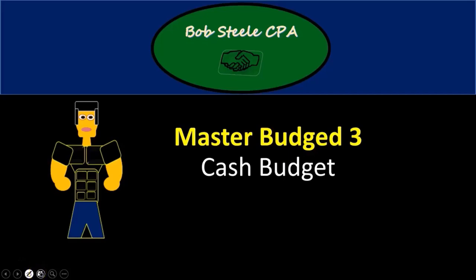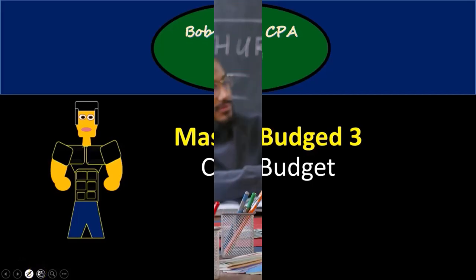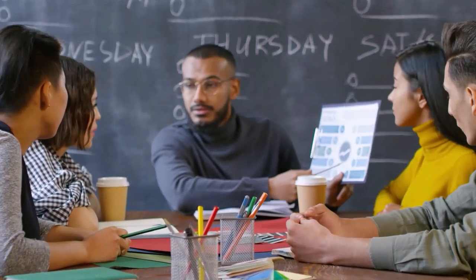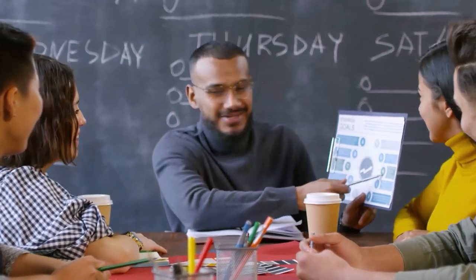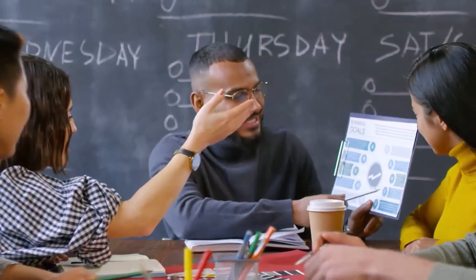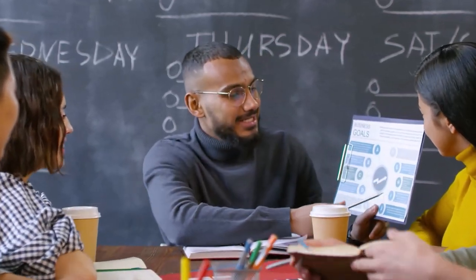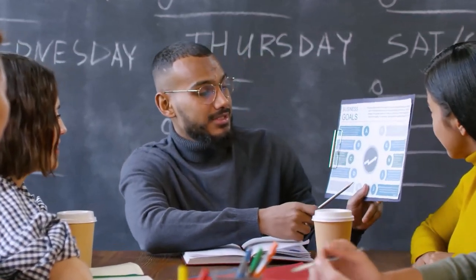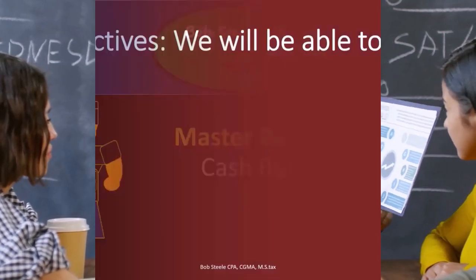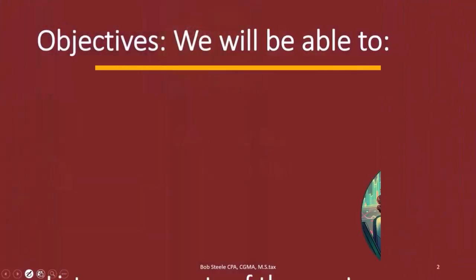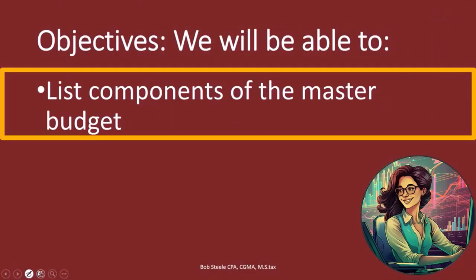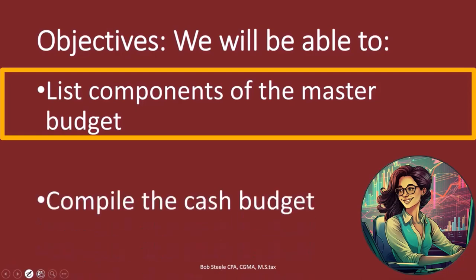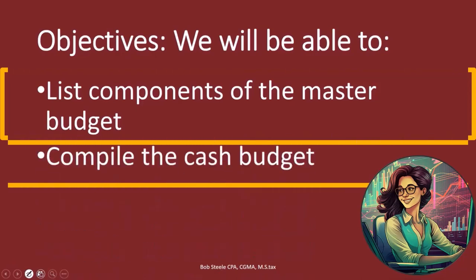Hello, in this lecture we're going to talk about the master budget part 3. We're going to go into the cash budget. If you haven't looked at parts one and two, you may want to go back and take a look at those first before we go through the cash budget. At the end of this we will be able to list components of the master budget and compile the cash budget.